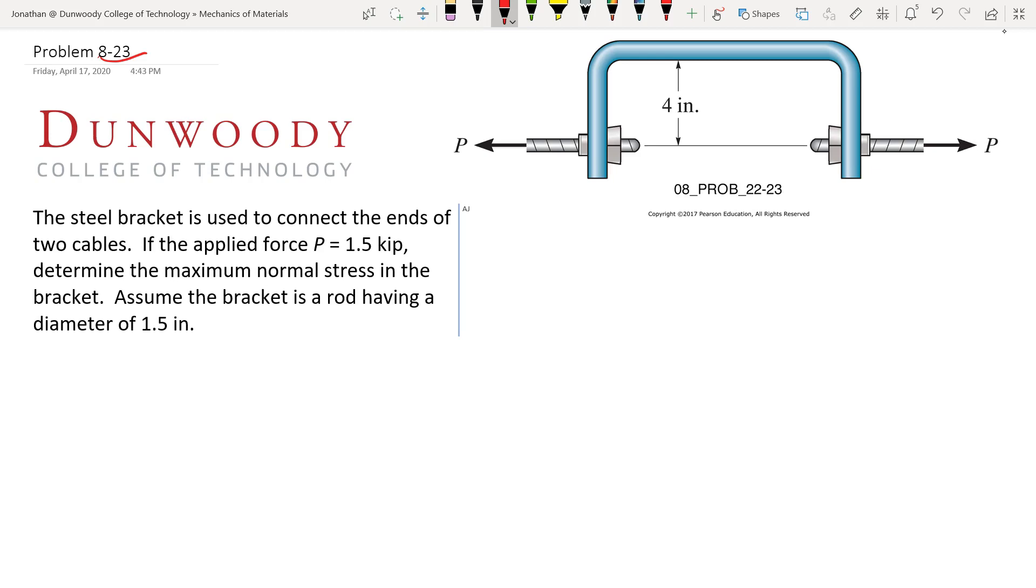This is a combined loading problem. So we have a steel bracket and we're applying a load P to both ends. And unlike what we've done earlier, we had an axial load, we would have had something inside of here. That would have been pretty easy to figure out what our internal loads were.